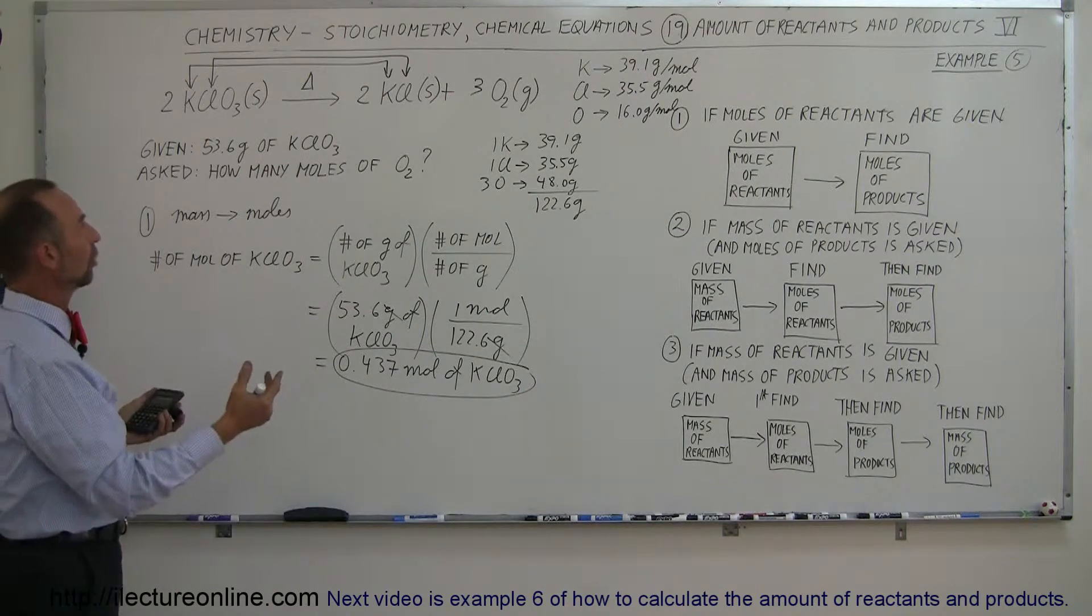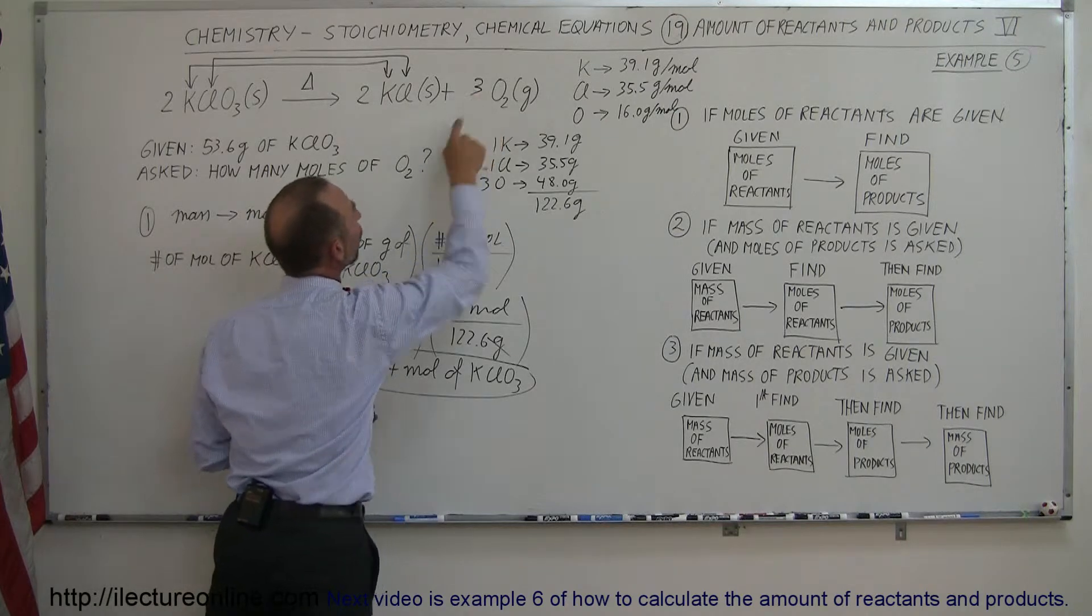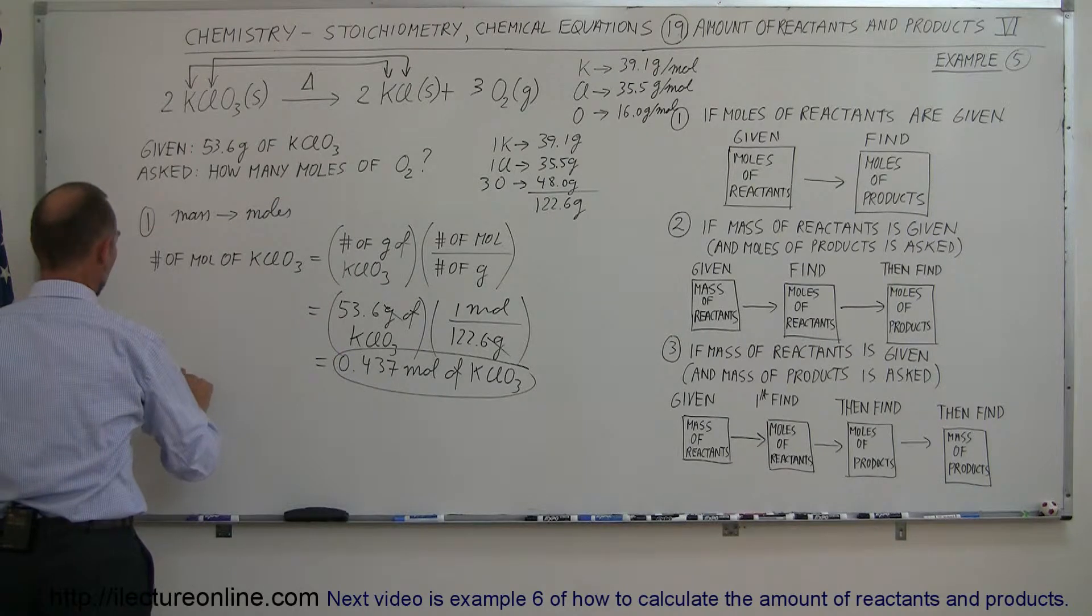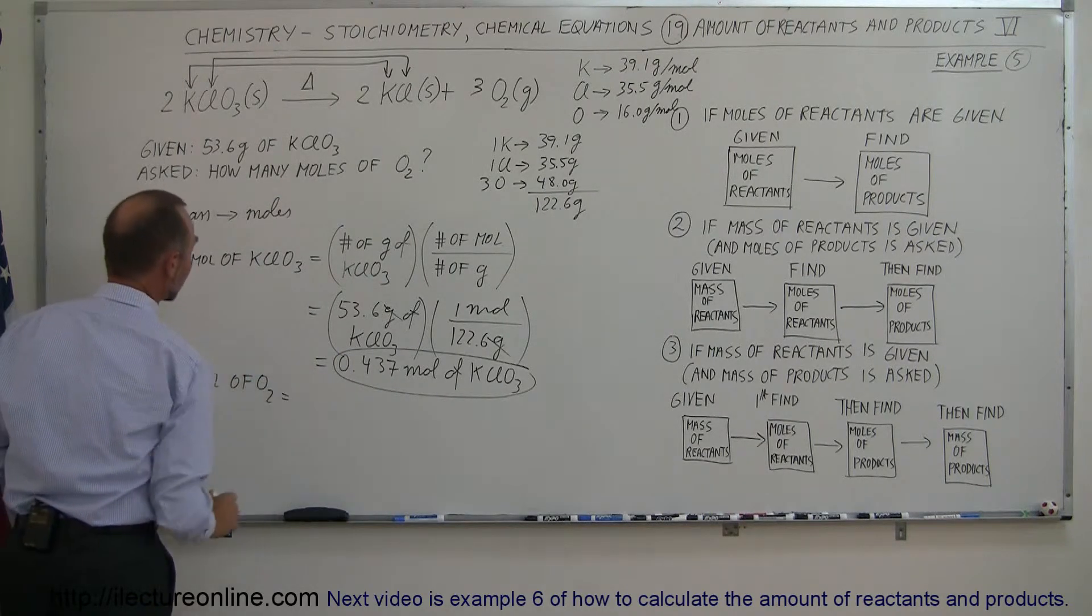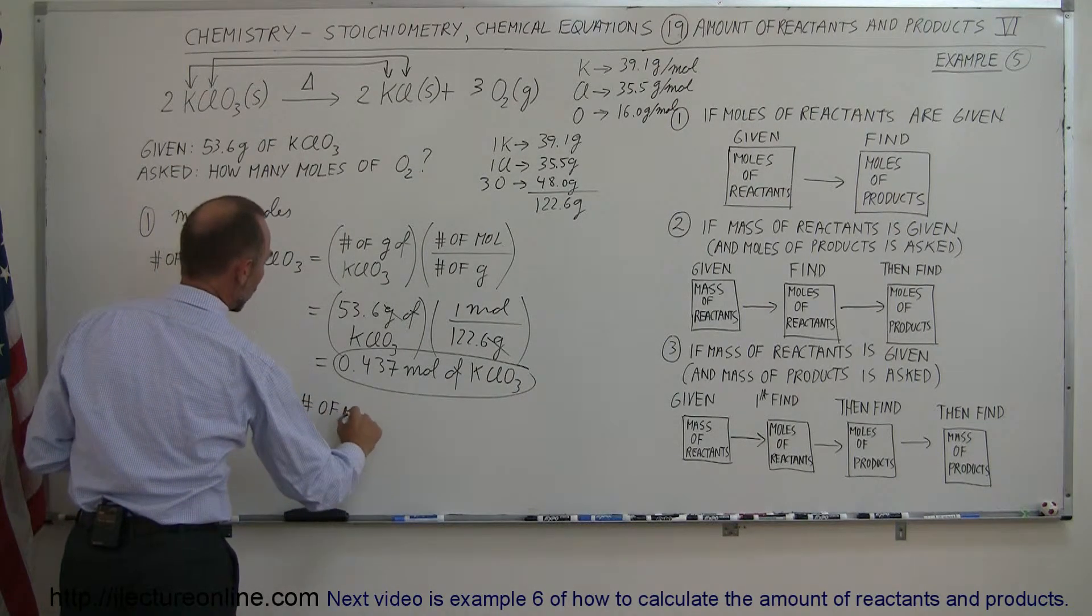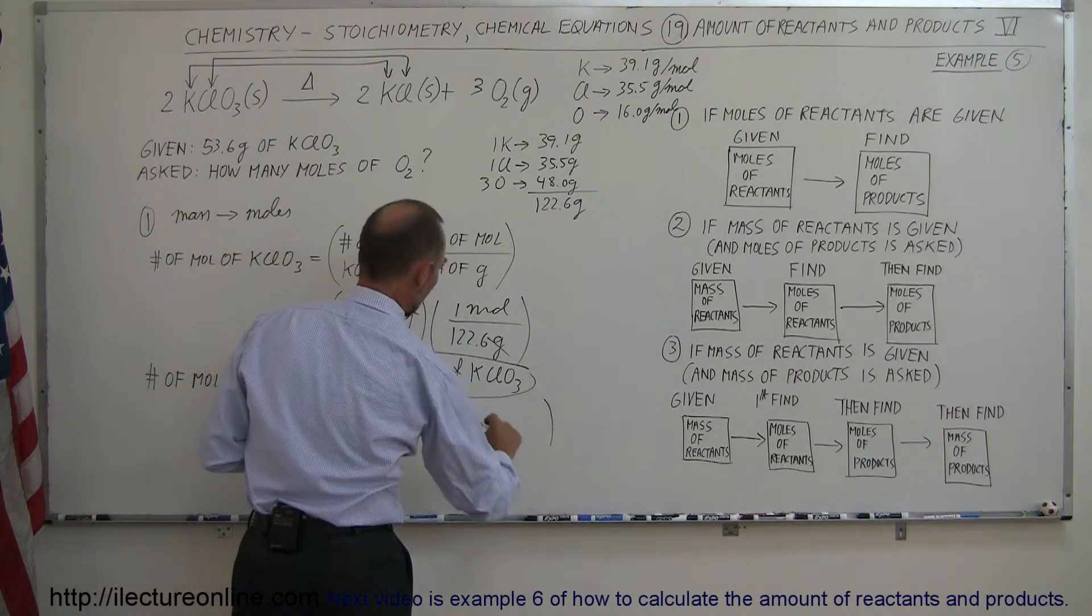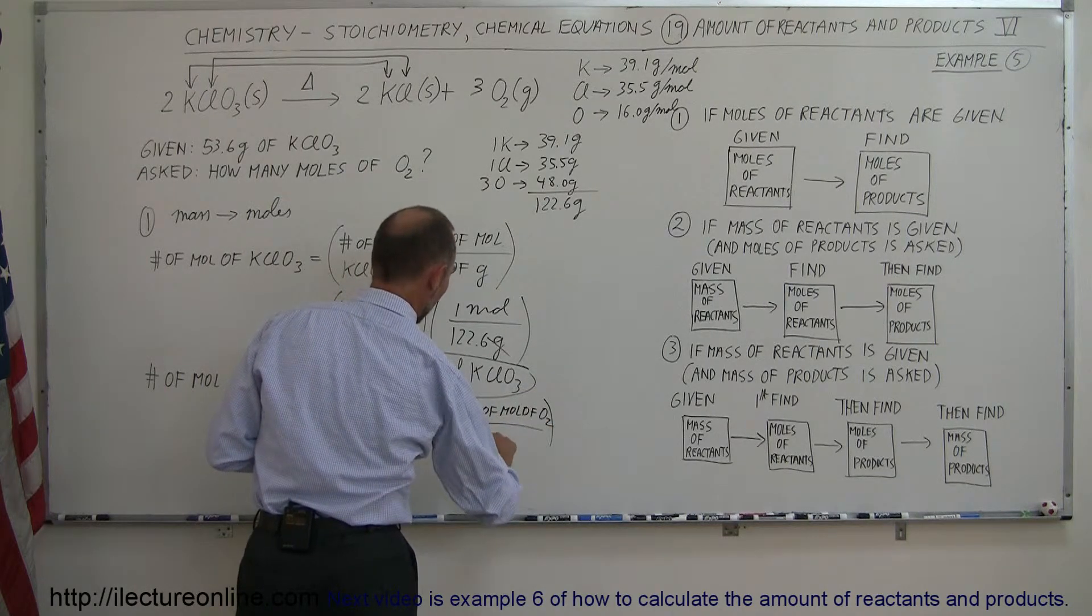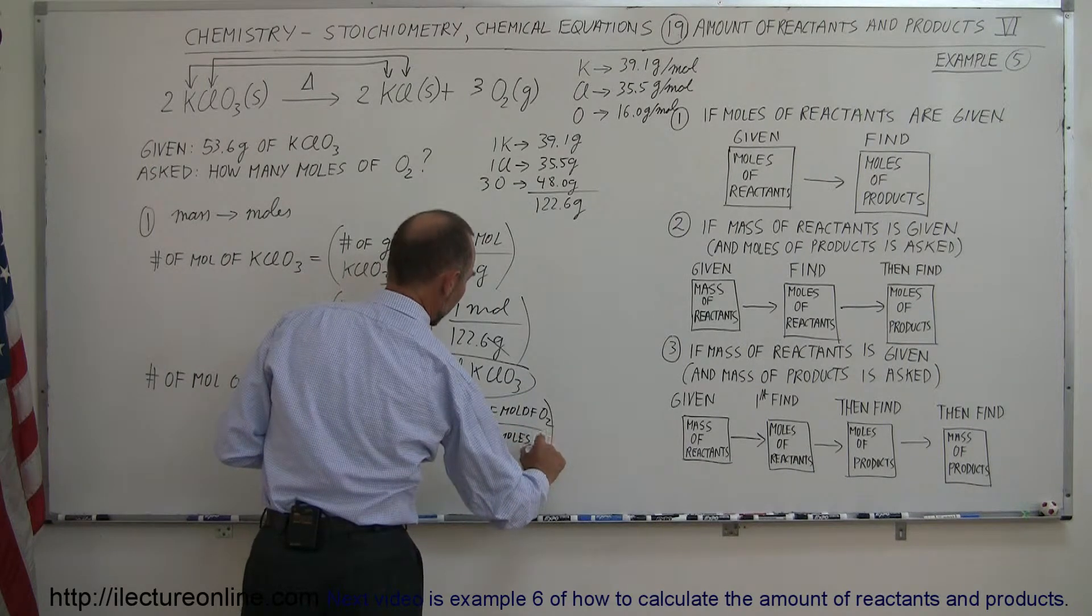Now I have a ratio. For every two moles of potassium chloride, this reaction will produce three moles of oxygen gas. So the number of moles of oxygen gas is equal to the number of moles that we started with. So the number of moles of potassium chlorate multiplied times the ratio of the number of moles of oxygen divided by the number of moles of potassium chlorate.